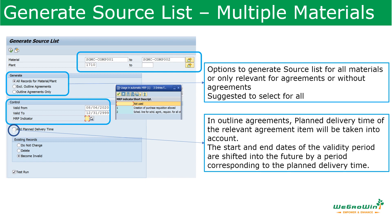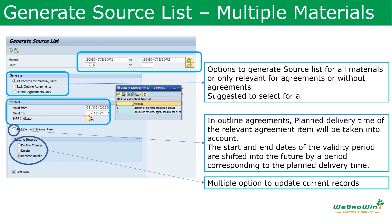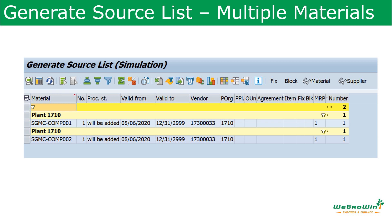In outline agreements, the planned delivery time of the relevant agreement item will be taken into account. The start and end date of the validity period are shifted to the future by a period corresponding to the planned delivery time if you check that field. There is also an option to delete all existing source list records or allow them to remain. The test run indicator allows a purchasing user to run the program without actually creating the source list. It is strongly suggested to run the program with the test run indicator first to ensure the right selection parameters are selected and the right source list is getting updated. Then remove the test run checkbox and run the program again to generate the source list.